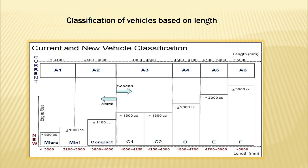The next classification is on the basis of length or CC — cubic centimeters of cylinder engine capacity. Based on length/capacity, categories are: micro, mini, compact, C1, C2, D, E, and F. As the length increases, we proceed from micro through mini, compact, C1, C2, D, and so on, as shown on the slide.